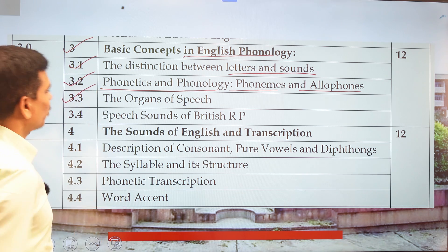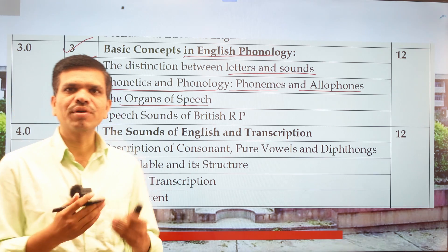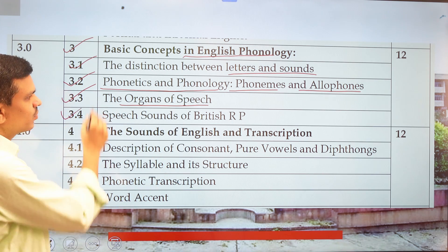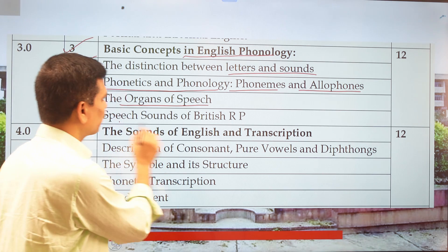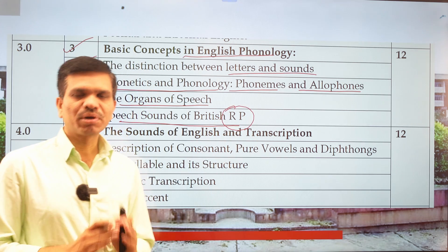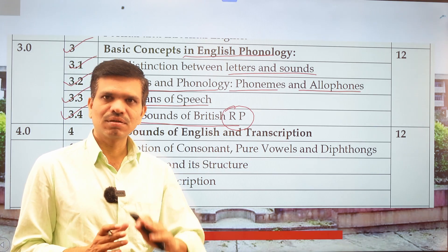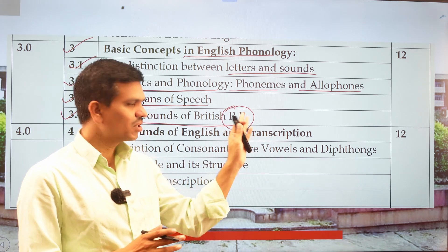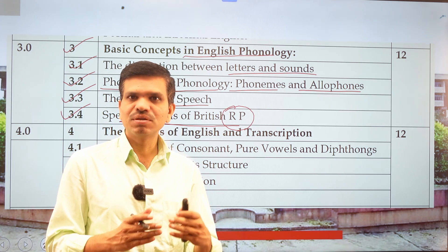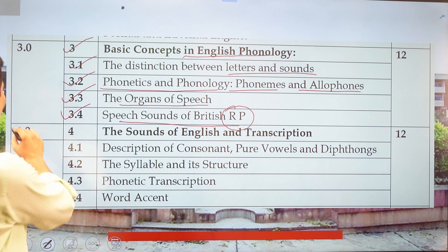In point 3.3, we will consider the organs of speech — which organs contribute in producing sound or speech. The next point covers the speech sounds of British RP. RP, or Received Pronunciation, is the most standard dialect of the English language — the scientific dialect of English — which is the variety the BBC uses.